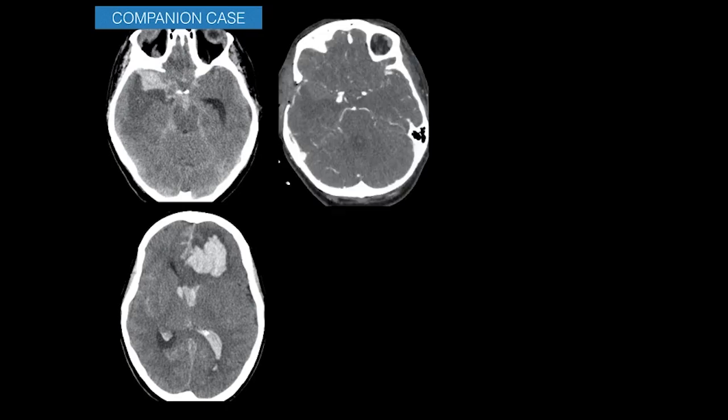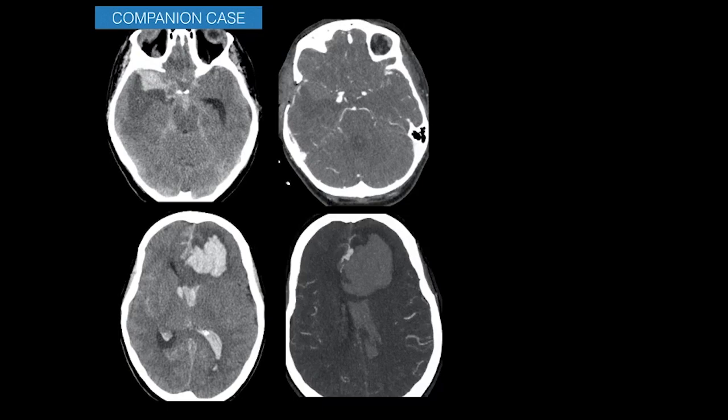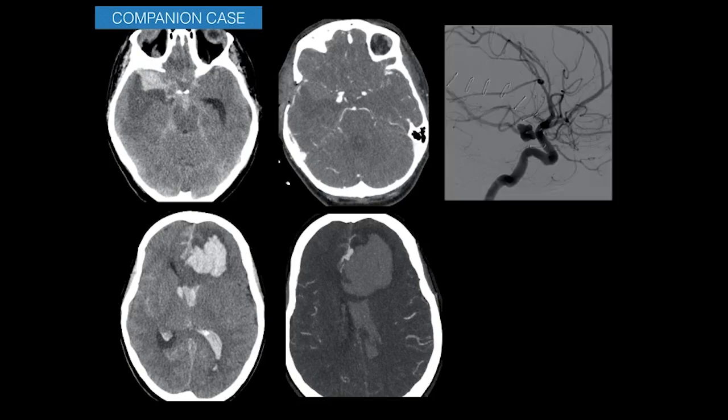Sometimes subarachnoid blood has associated extension into adjacent parenchyma. Two cases illustrate this: one with subarachnoid bleed and a parenchymal hematoma in the right temporal lobe, and another with predominantly parenchymal bleed in the left frontal lobe. CT angiogram showed a PCOM aneurysm causing subarachnoid and parenchymal hematoma in the first case, and a distal anterior cerebral artery aneurysm causing parenchymal hematoma with intraventricular extension and subarachnoid bleed in the second.